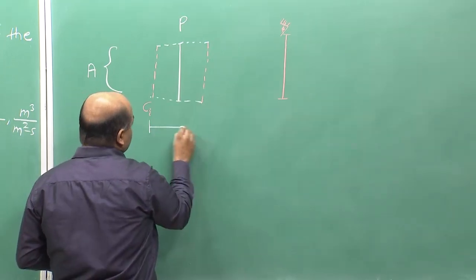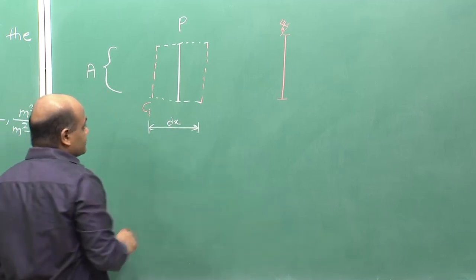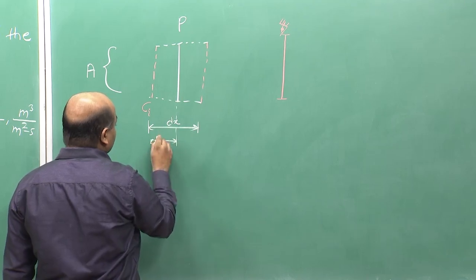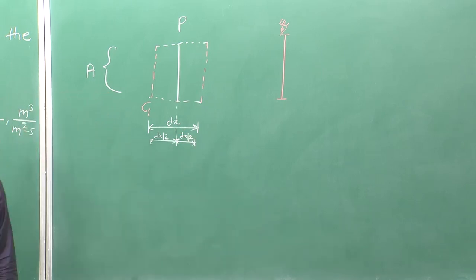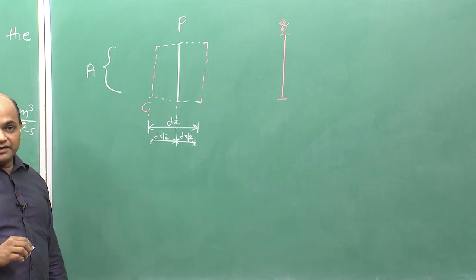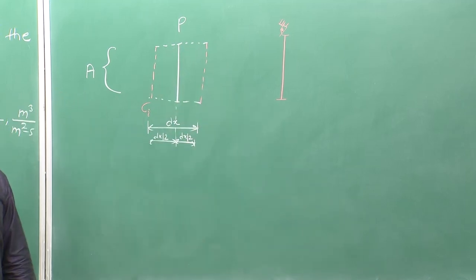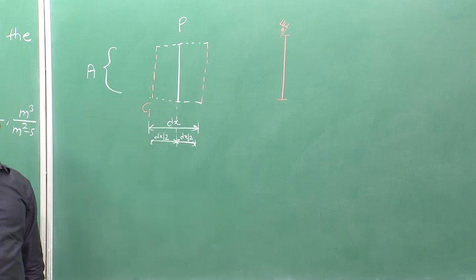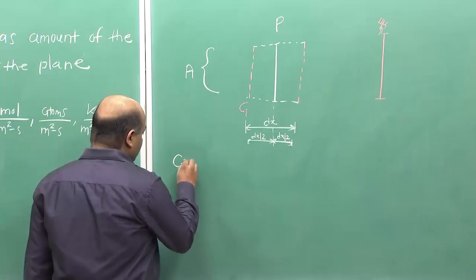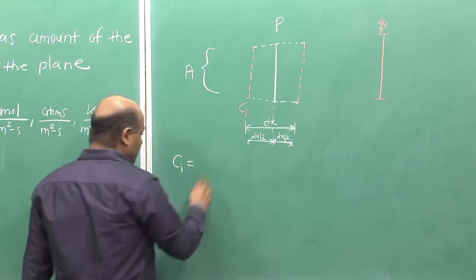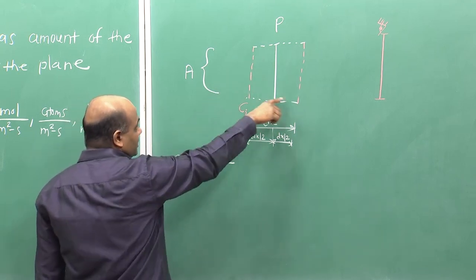This distance dx forms a small volume element around P, with dx/2 on each side, in a small interval of time dt. If there are Nᵢ number of atoms of component i in this compositional front, then the concentration of i in this small volume element can be written as Nᵢ divided by the volume, where volume is the cross-sectional area A times dx.